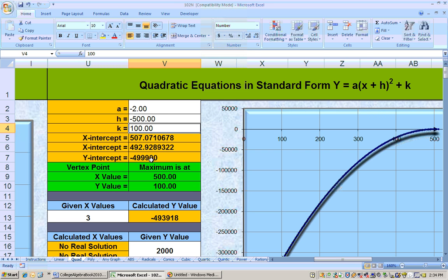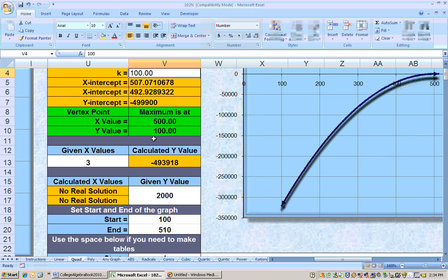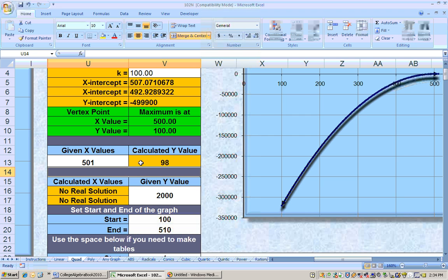Here's the X intercepts. Here's the Y intercepts. And here's the maximum. The maximum dollar value or revenue is $100, and that's if you manufacture or sell X of these or 500 of these units of whatever they are. And if we wanted to find out what would be the revenue if we sold, I don't know, let's say 501 of them or 500 or whatever, well, the revenue would be $98.